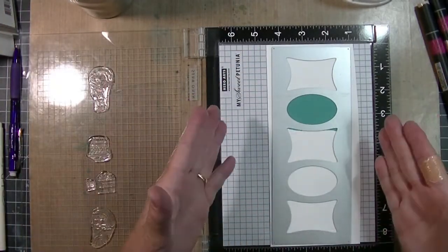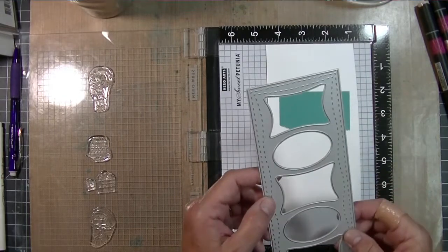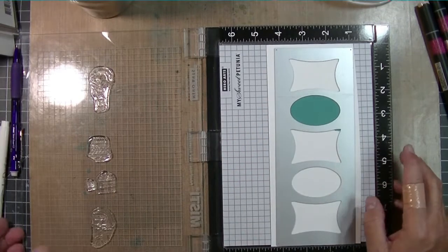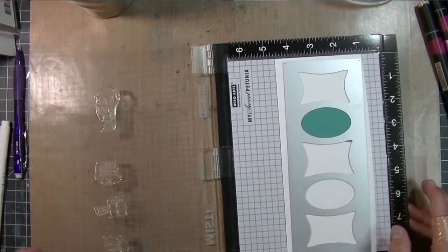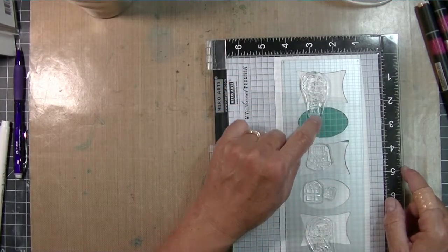This is how I did it. I just flipped it over, put it down in my MISTI and then put the stamps where I wanted them to go and then picked it up with my MISTI. So I put the stamps down and then I just closed the MISTI and picked up the stamps.